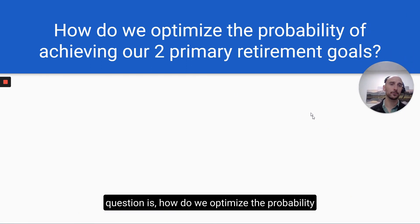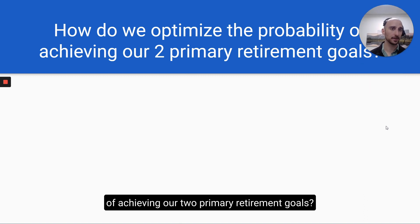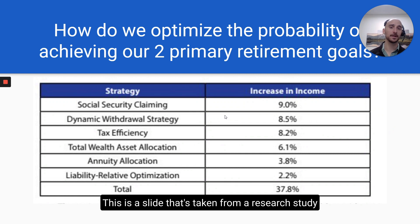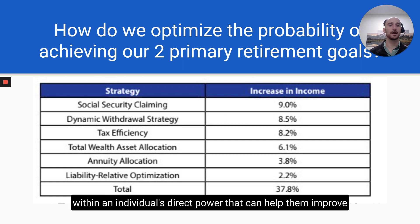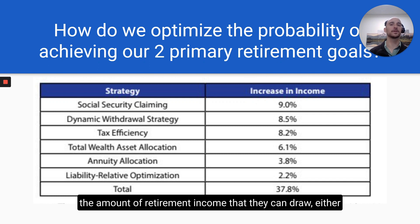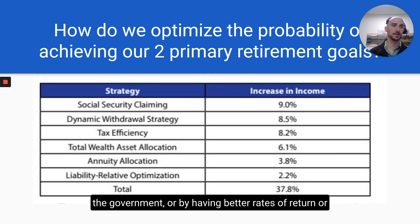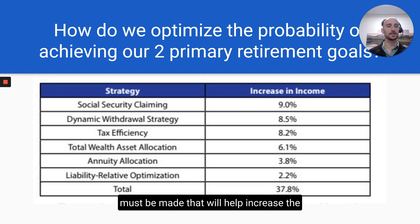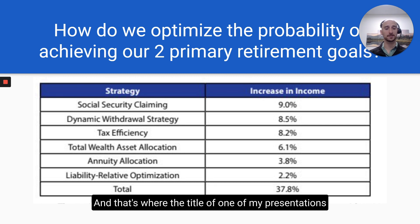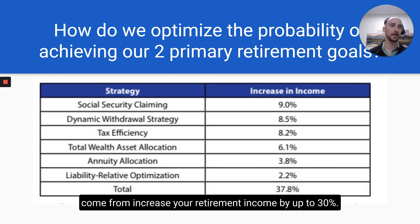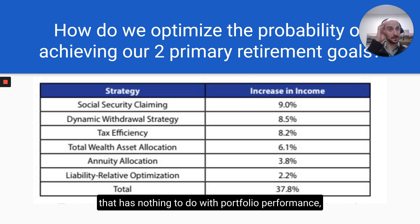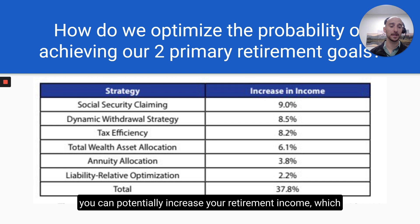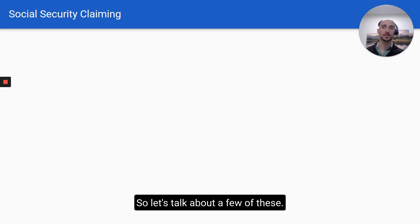As a financial planner, the question is how do we optimize the probability of achieving our two primary retirement goals? This slide is taken from a research study done to find out what decisions within an individual's direct power can help them improve the amount of retirement income they can draw — either by keeping more of their money, giving less up to the government, or by having better rates of return and better decision-making. There are six categories in which foundational decisions must be made to increase overall retirement income value. That's where the title comes from: increase your retirement income by up to 30% — through good decision-making that has nothing to do with portfolio performance.